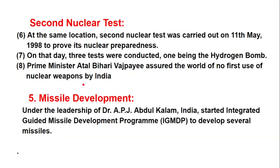The Pokharan 2 tests were a series of five nuclear bomb test explosions conducted by India at the Indian Army's Pokharan test range in May 1998. It was the second instance of nuclear testing conducted by India. The first test, code named 'Smiling Buddha', was conducted in May 1974.